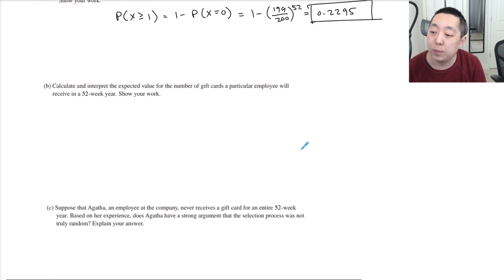Calculate and interpret the expected value for the number of gift cards a particular employee will receive in a 52-week year. Show your work. Well, the expected value of X. From a binomial distribution, the expected value is simply N times P. And that's 52 times 0.005, which is 0.26. So he's expected to win 0.26 cards per year.